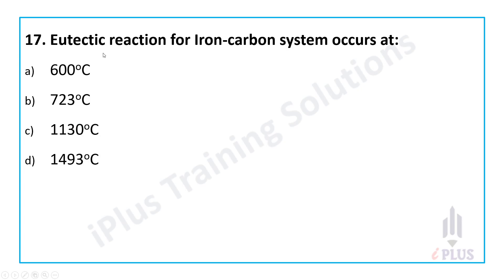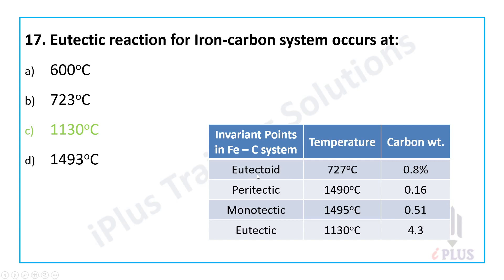Question 17: In the iron-carbon system, the eutectic reaction occurs at 1130 degrees Celsius with 4.3% carbon by weight — this corresponds to cast iron. The eutectoid reaction occurs at 723 degrees Celsius at 0.8% carbon. The peritectic reaction occurs at 1490 degrees Celsius at 0.16% carbon, and the monotectic reaction occurs at 1495 degrees Celsius at 0.51% carbon.